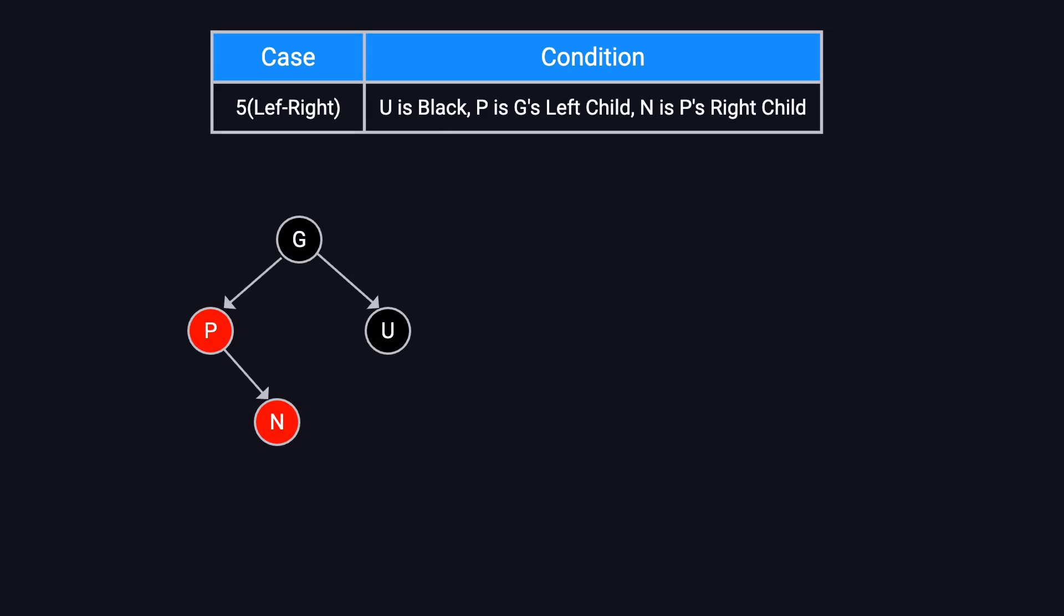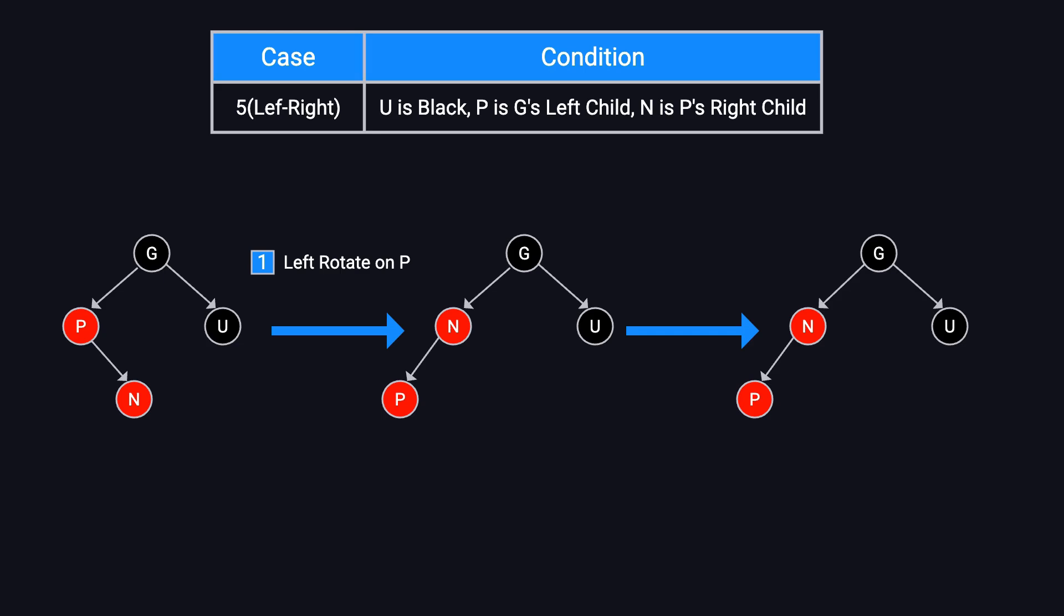Case five. Also called left-right. In this case, U is black, P is G's left child, and N is P's right child. To fix this, we first perform a left rotation on P. This transforms case five into case three, which we then resolve using the same steps as case three.